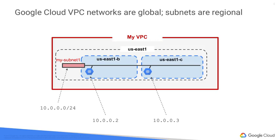In this example, your VPC has one network. So far, it has one subnet defined in GCP's US East 1 region. Notice that it has two Compute Engine VMs attached to it — they're neighbors on the same subnet, even though they are in different zones. You can use this capability to build solutions that are resilient, but still have simple network layouts.